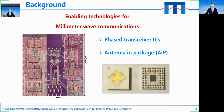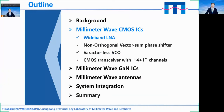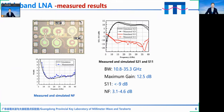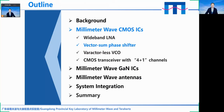Now let me introduce the first CMOS key component used in our system: the wideband low noise amplifier. The picture of the LNA chip is shown here. The size of the chip is 0.6 by 0.4 millimeter. The operating frequency ranges from 10.8 to 35.3 GHz, with gain ranging from 9 to 12.5 dB. The noise figure is from 3.1 to 4.6 dB, and the input return loss is less than minus 9 dB.